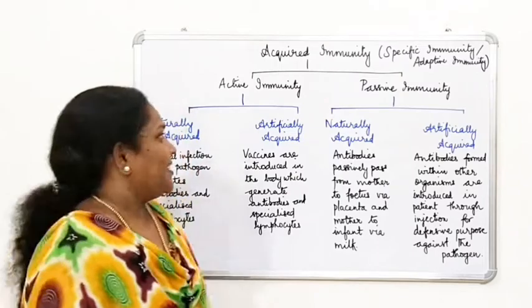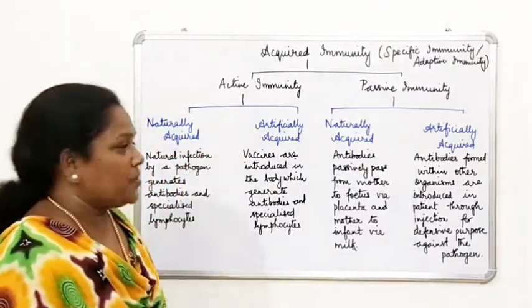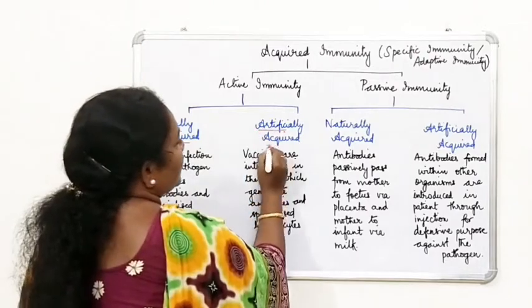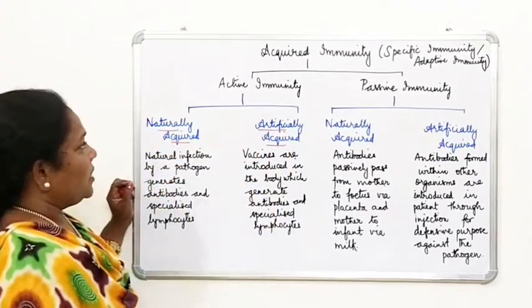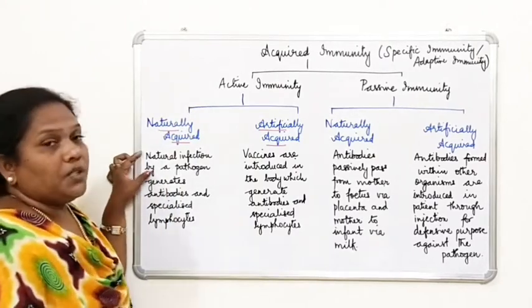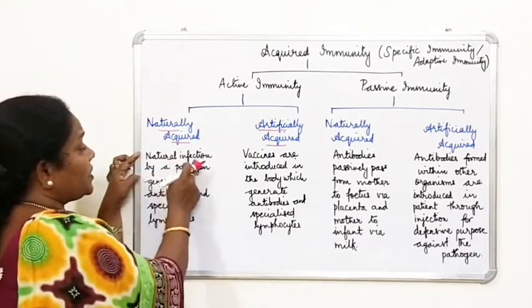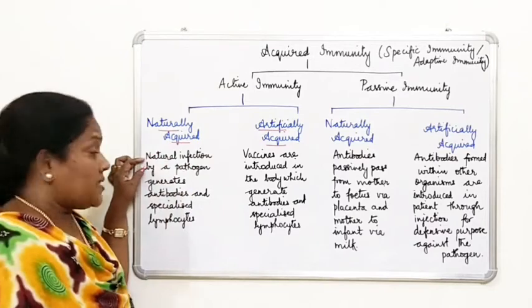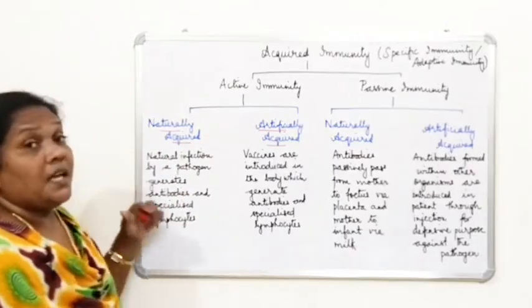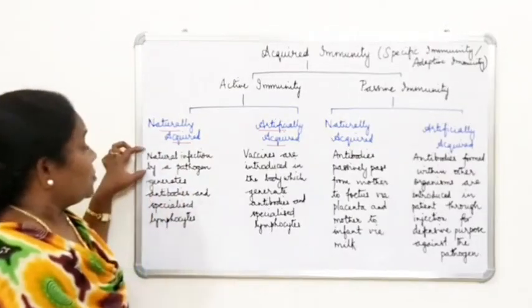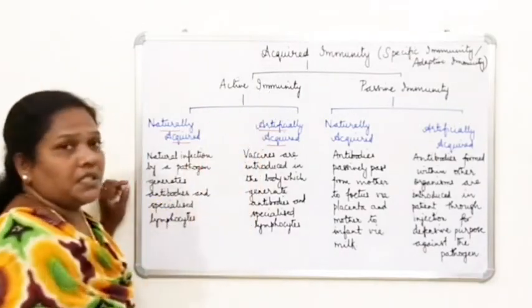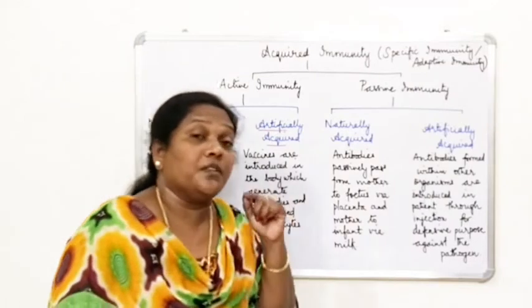In active immunity there are two types: naturally acquired immunity and artificially acquired immunity. Naturally active immunity is developed by the natural infection of a pathogen — it generates antibodies and specialized lymphocytes, which occurs due to natural infection.